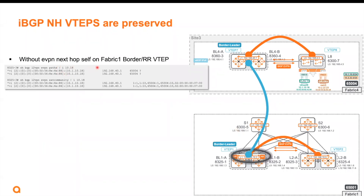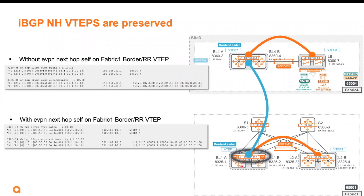We want the access VTAPs to always build tunnels to the border, and between the borders they build their own tunnel. So without EVPN next hop self on the fabric one border — the border route reflector VTAP — you will see the next hop is actually 40.1, which is the fabric four border. And the remote router MAC is colon seven, which is wrong, because that belongs to 40.1. When you actually add EVPN next hop self on the fabric one border route reflector, you can see the next hop is being changed correctly to 10.3, which belongs to the correct border.